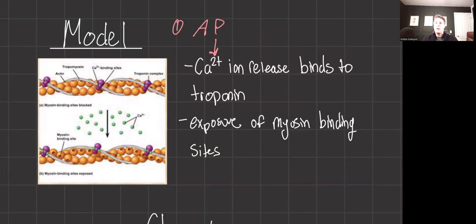That released calcium will then bind to troponin, causing a conformational change that moves tropomyosin out of the way from myosin binding sites on actin filaments. This exposes myosin binding sites.